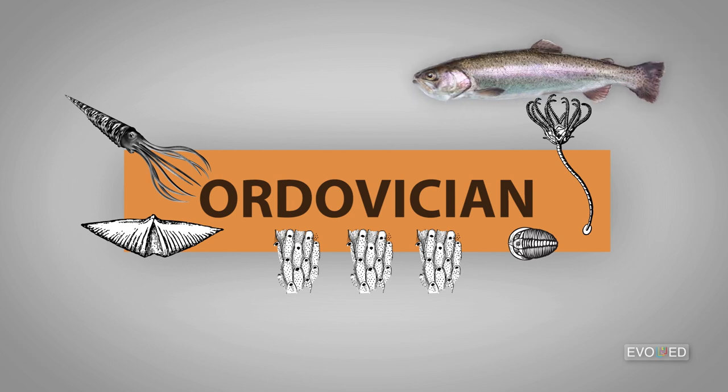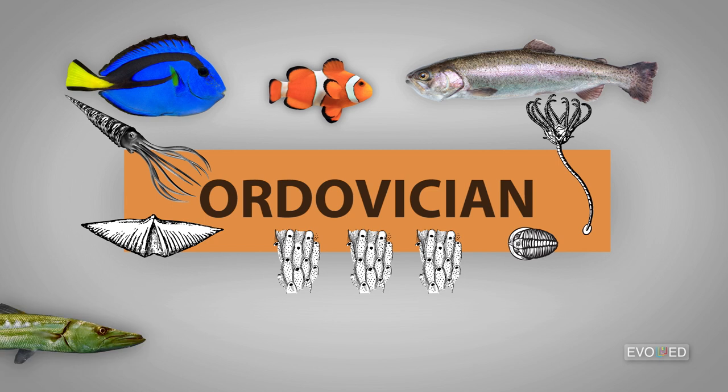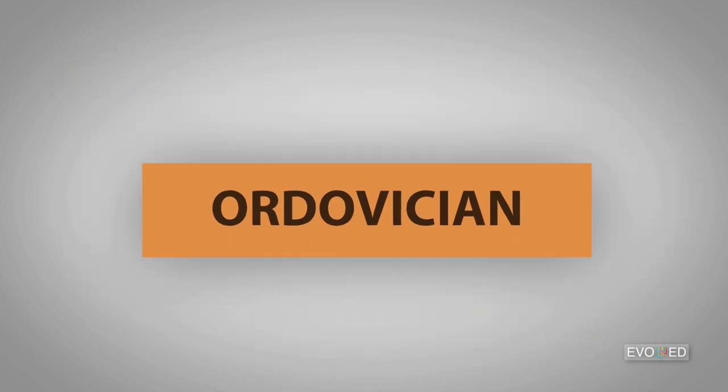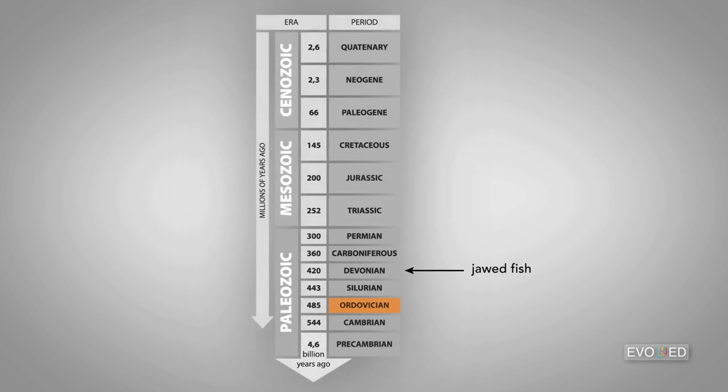One thing that you'll never find in this fossil layer, though, are jawed fish. I'm not just talking about modern day jawed fish like a clownfish or a blue tang or a barracuda. I'm talking about any jawed fish at all. The first jawed fish in the fossil record don't appear until millions of years later in the Devonian time period. And even then, the fossilized jawed fish specimens we find aren't from modern day species. They're from species that have long disappeared.